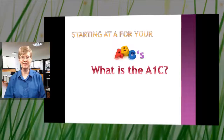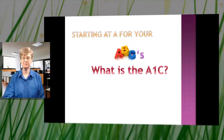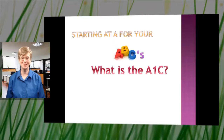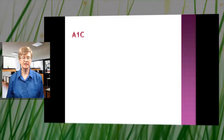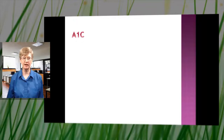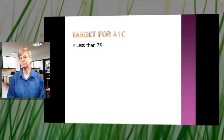I'm going to start with the A in your ABCs — the A1C. If you've had diabetes for a while, you're probably familiar with this. If you're newly diagnosed, this may be a new term for you. The A1C stands for the hemoglobin A1C, and it gives you an average of all of your blood sugar checks over a two to three month time period.